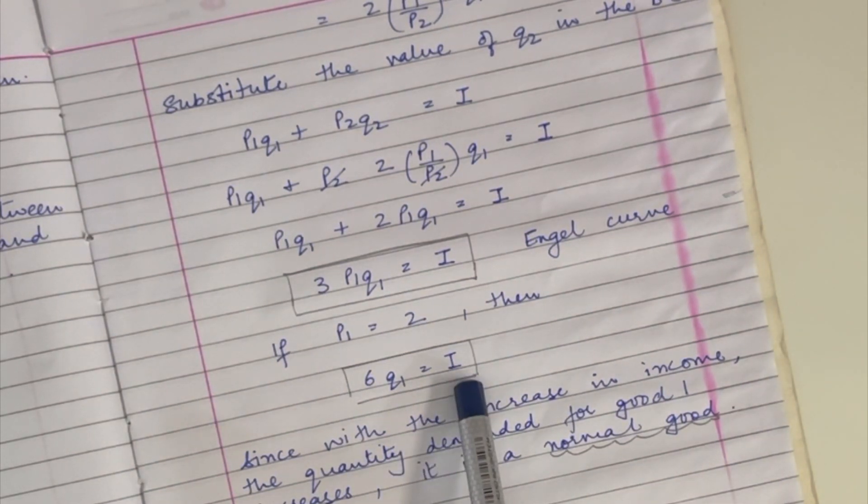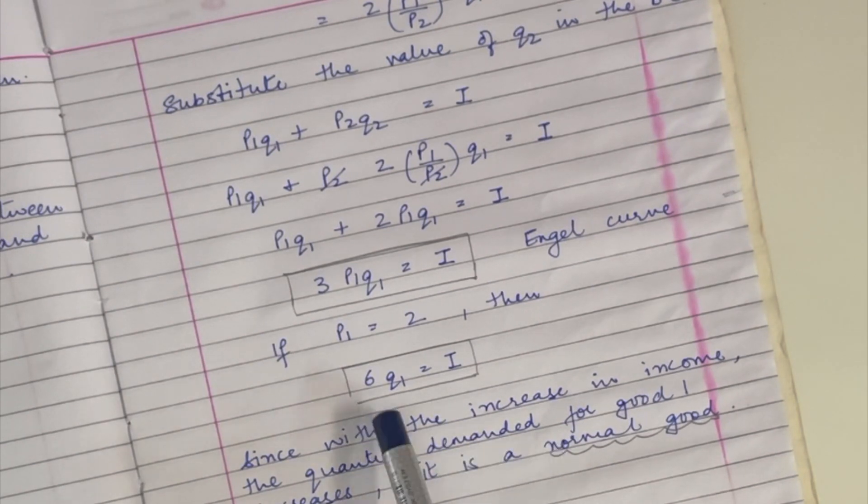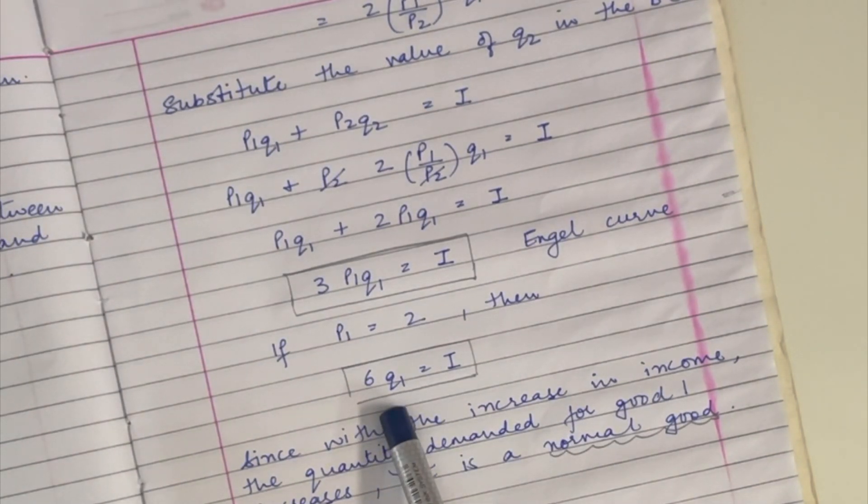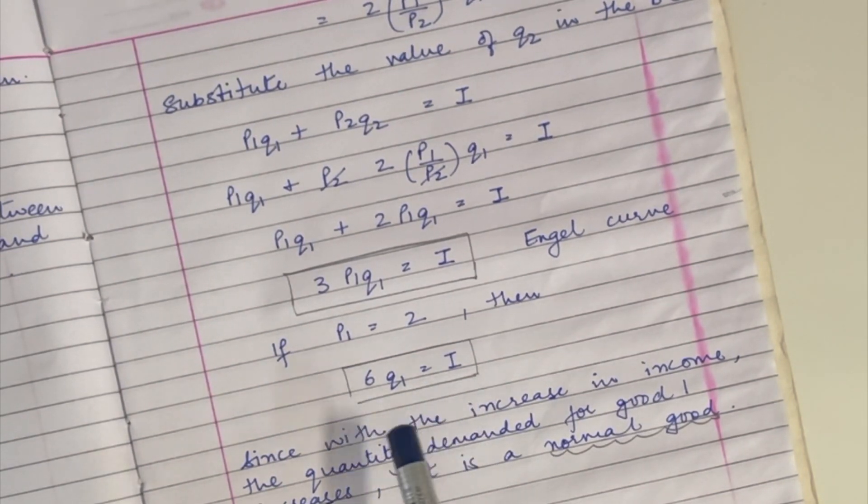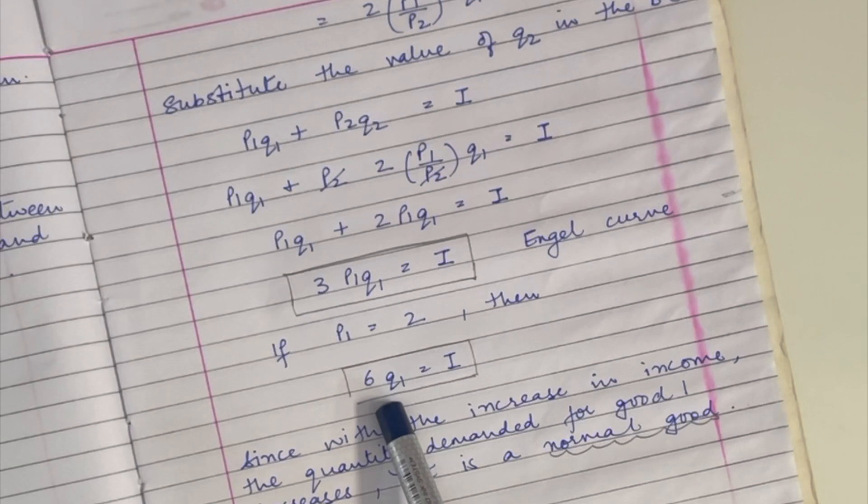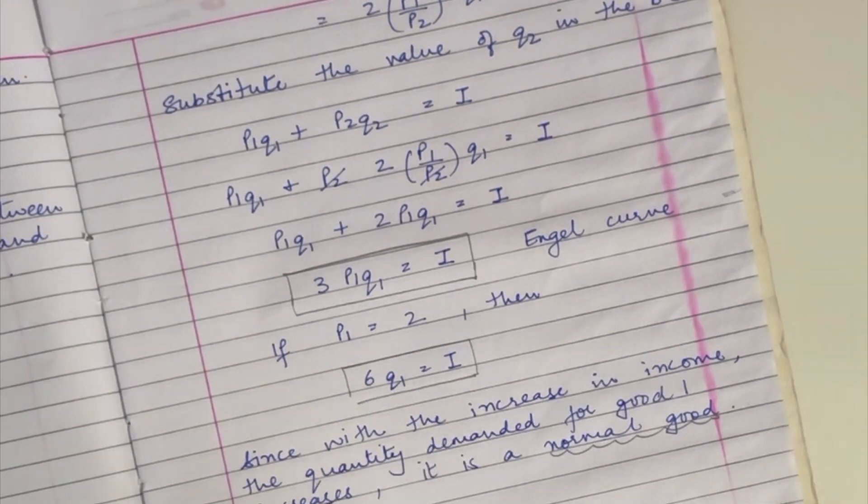since with the increase in income, if I increase my income, then the quantity demanded for good one will increase, right? Because they are directly related to each other. So then it means that q1 is a normal good, which generally happens.